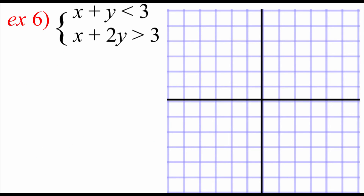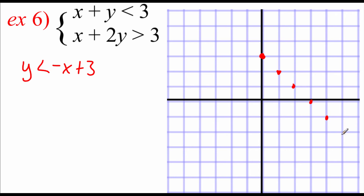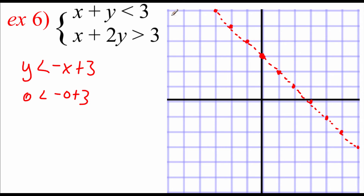Looking at the top equation, we've got x plus y is less than three. Subtracting x over gives y is less than negative x plus three. This one gets a dotted line since it's just less than. We go up three for the y-intercept and use a slope of negative one, sketching in red. Using test point zero, zero: zero is less than negative zero plus three, so zero is less than three — true — so we shade on the same side as that point.